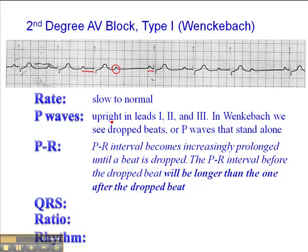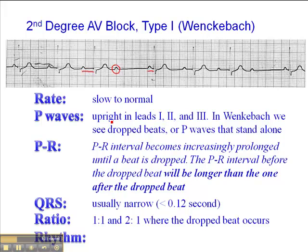The QRS is usually narrow, less than 0.12 seconds. The ratio is 1-to-1 in the underlying rhythm, and then 2-to-1 where there's a drop beat. The rhythm is typically irregular.